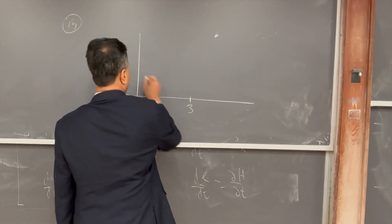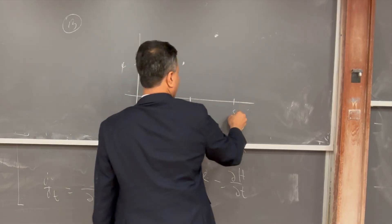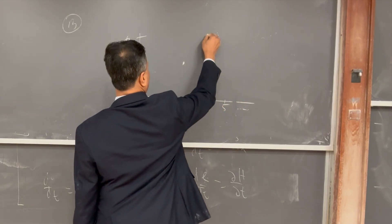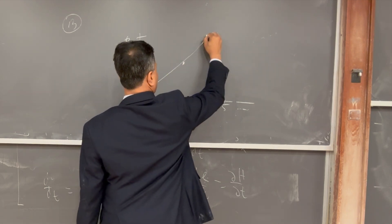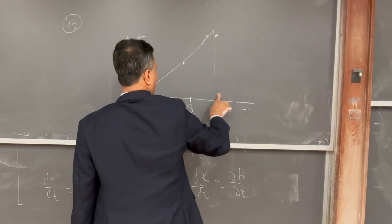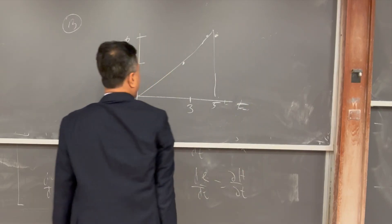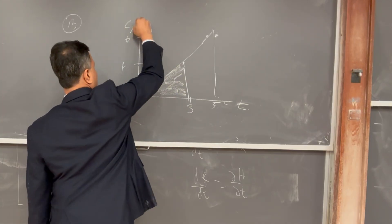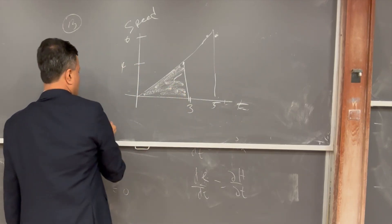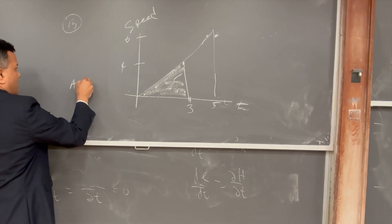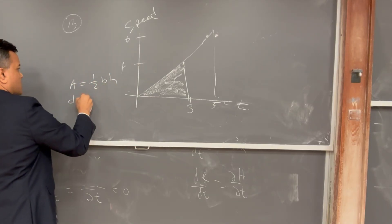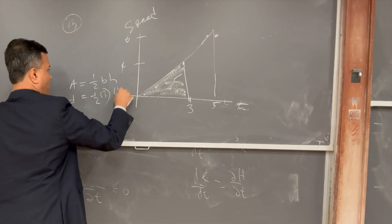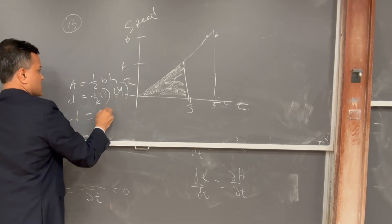Problem thirteen: I have a speed versus time graph with points (3, 4) and (5, 6). I asked you to find the distance — not displacement — because this is a speed versus time graph. The area is distance. Using the triangle area formula: area = ½ × base × height = ½ × 3 × 4 = 6. So the distance is 6.